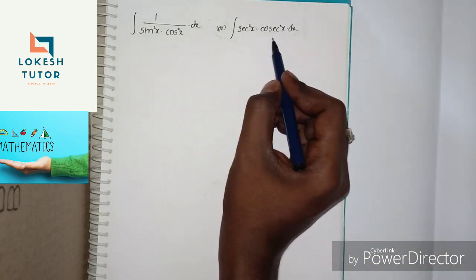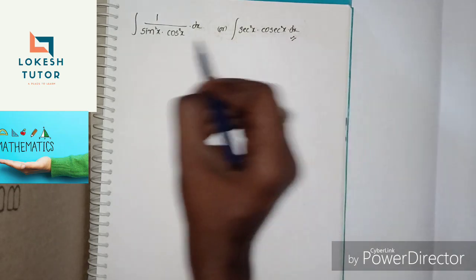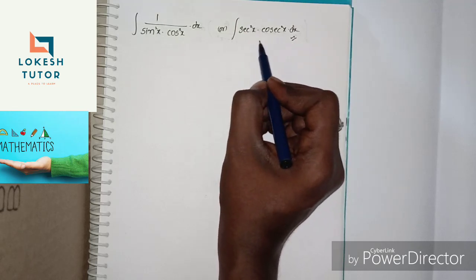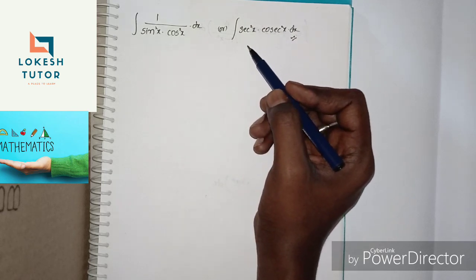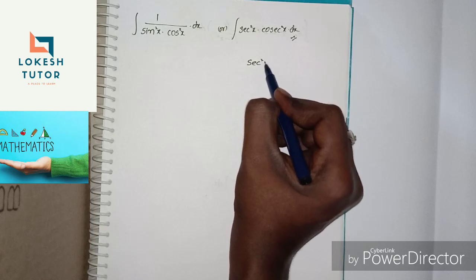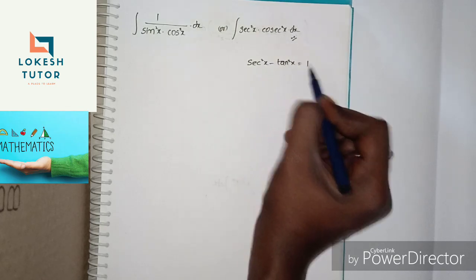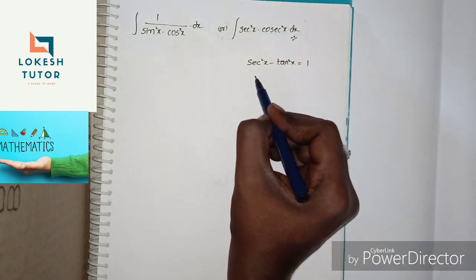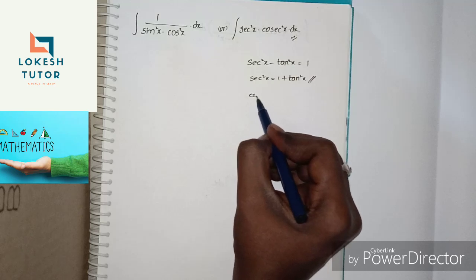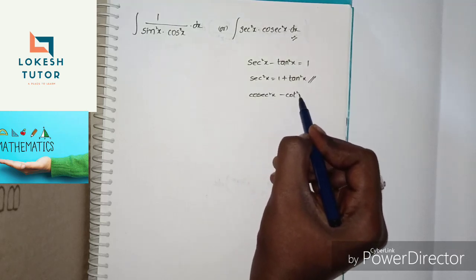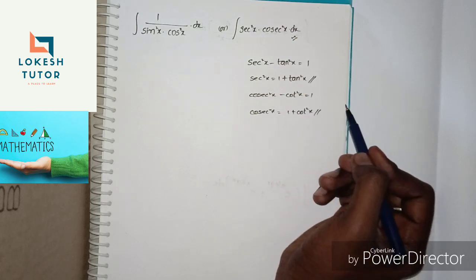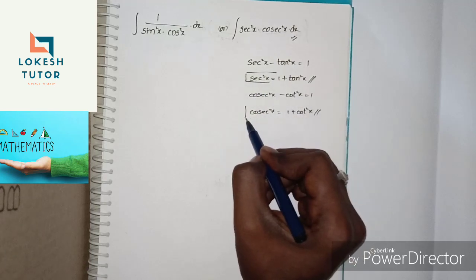Next question: Integral of sec²x · cosec²x dx. This does not match any direct integration formula, so we use trigonometric identities. The two identities are: sec²x − tan²x = 1, so sec²x = 1 + tan²x. And cosec²x − cot²x = 1, so cosec²x = 1 + cot²x.